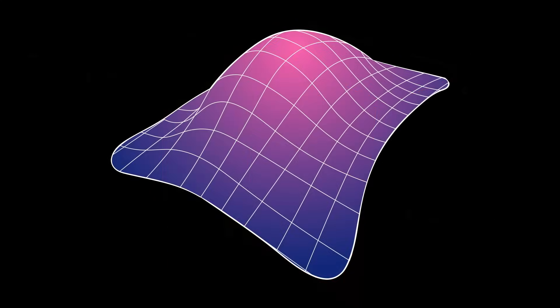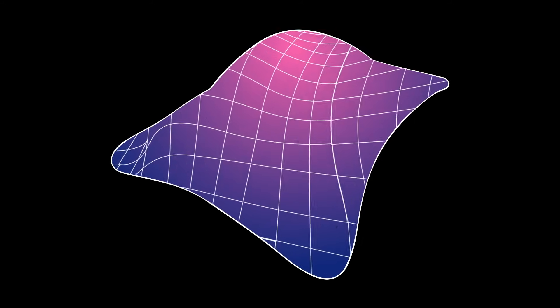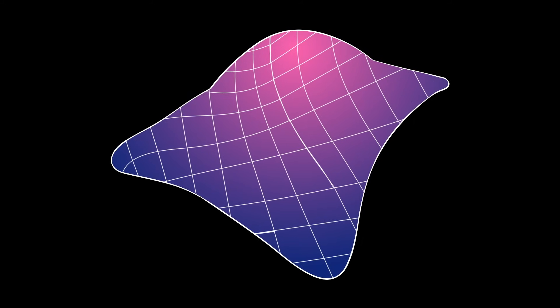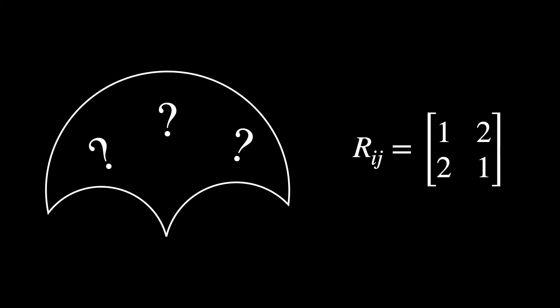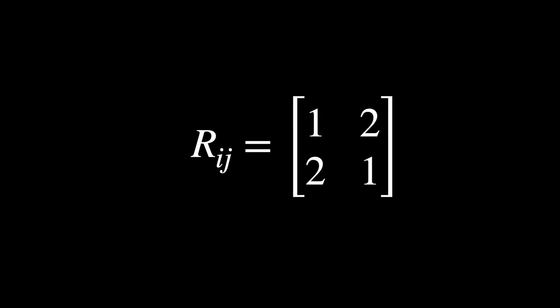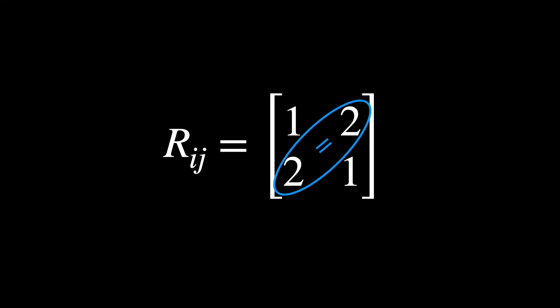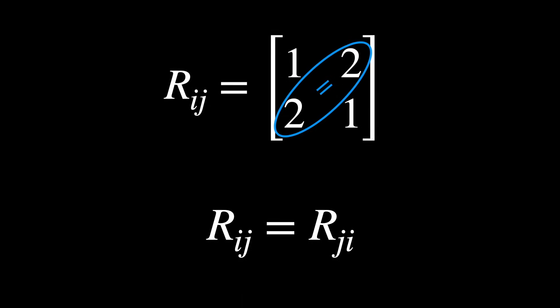Visually, this corresponds to rotating the perspective of the surface. Let's see a concrete example. Say that at a specific point on a curved surface, the Ricci curvature tensor is this. This is a symmetric matrix because Rij equals Rji.